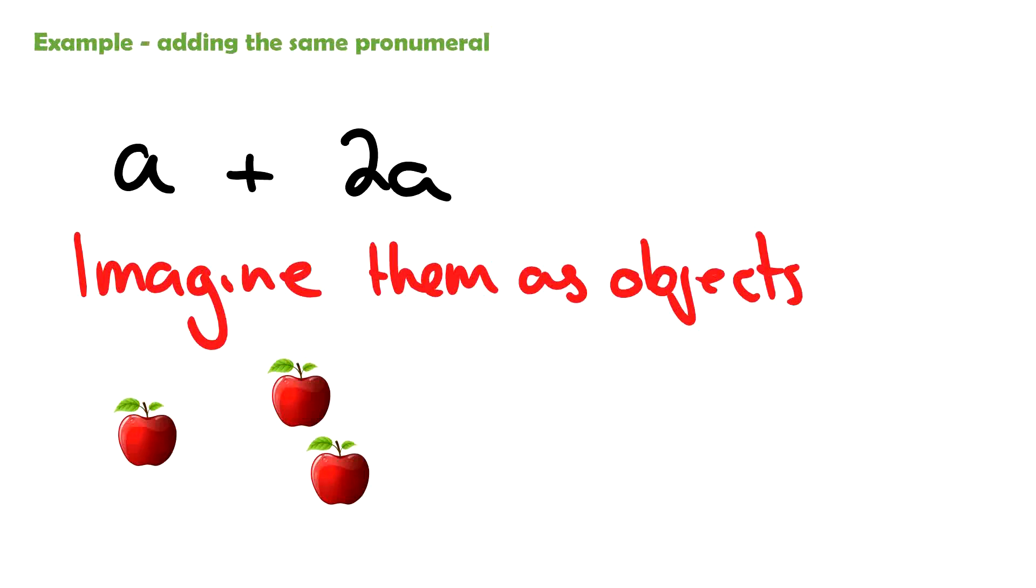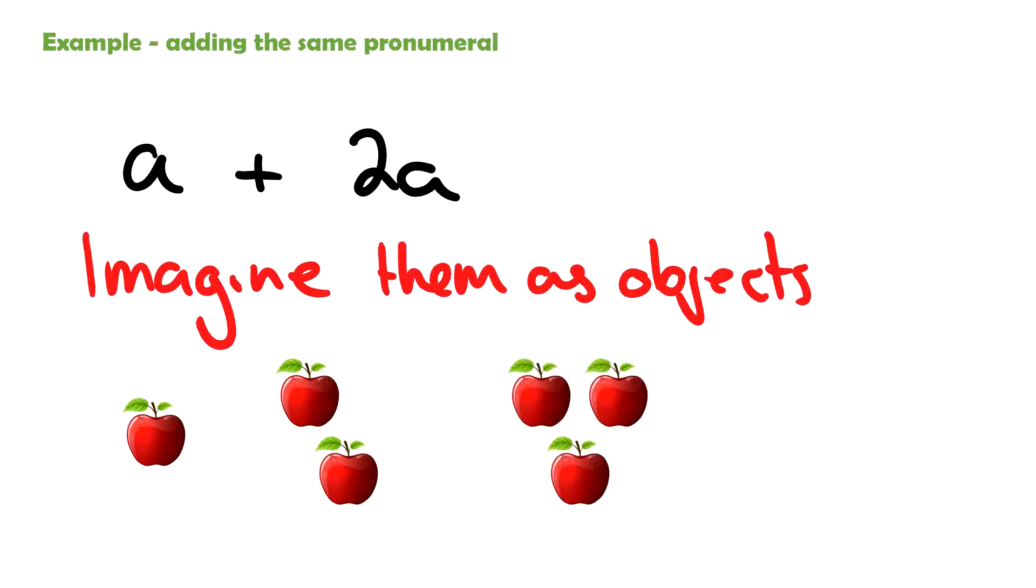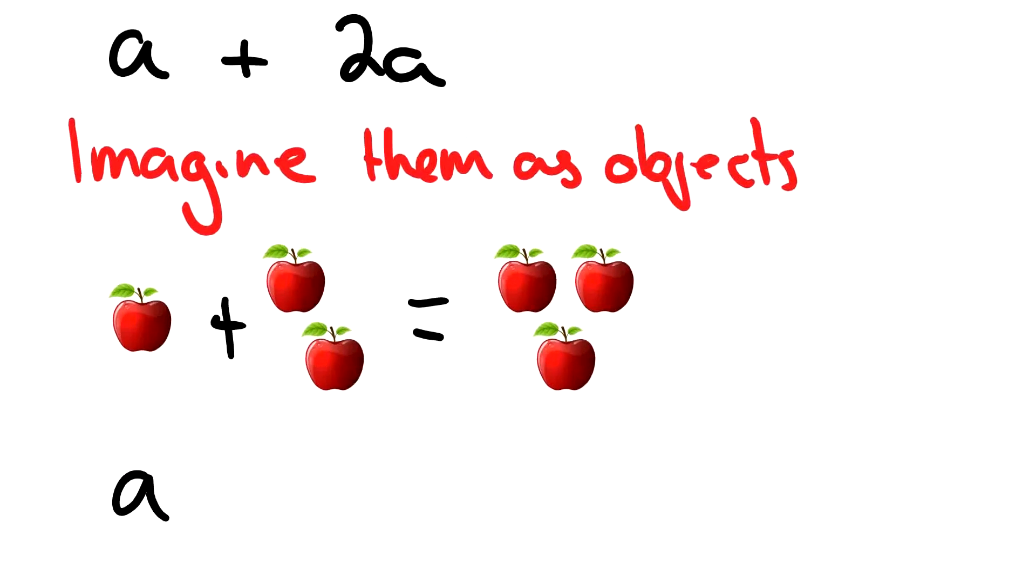So going forward, how many apples do we have all together? Well, I have one, two, three apples. So if we do it, we have three apples all together. So 1a plus 2a is 3a. So what I could do underneath is a plus 2a equals 3a.